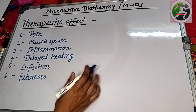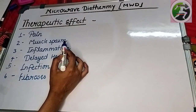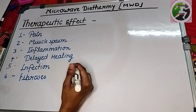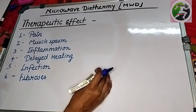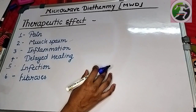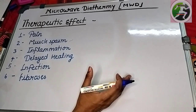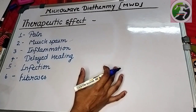This is our gate mechanism theory, which means pain is reduced. The second point is muscle spasm. What happens in muscle spasm? When we use MWD, the pain is less, which in turn reduces the muscle spasm.